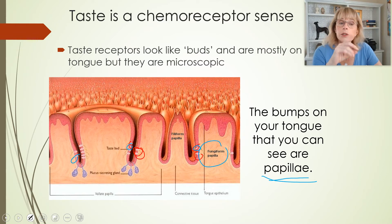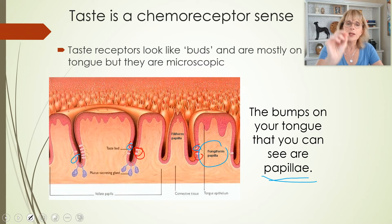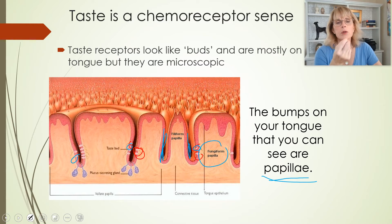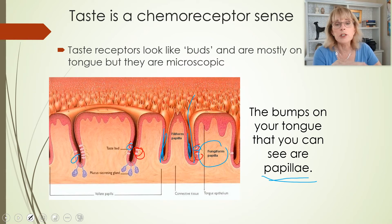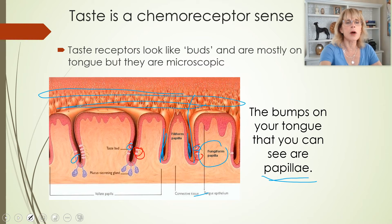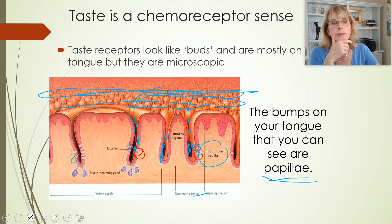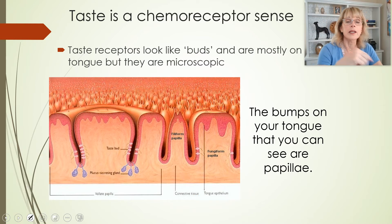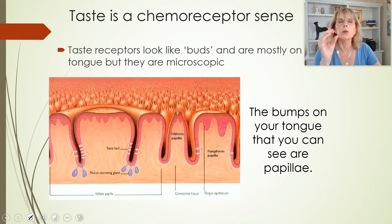The taste bud cells are found down in little crevices where liquid mixed with the chemicals we can taste goes down in there. If you've got a really dry mouth, it is very difficult for you to taste things appropriately because dryness prevents water from going down into the little crevices where the taste bud cells are. A dry mouth will suppress your ability to taste food. Flavors that don't go into a liquid form also do not get tasted very easily.